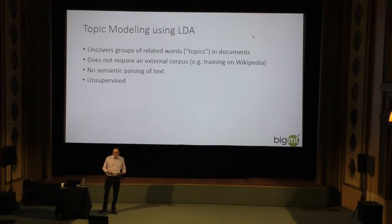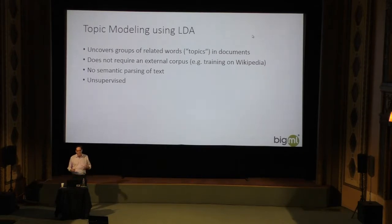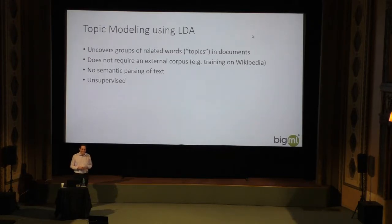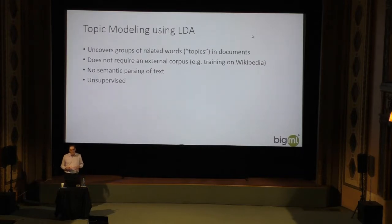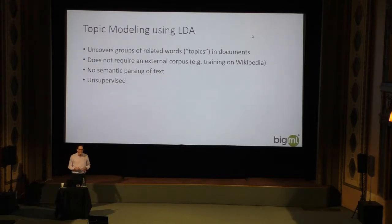The first thing to understand is that it's very convenient. It's a way to uncover groups of related words in a collection of text documents, and it doesn't require training on Wikipedia or anything like that. It doesn't require actual semantic parsing of the text. It's unsupervised, so all you have to do is take your collection of documents, give it to the algorithm, and it will extract these topics from your collection of documents.